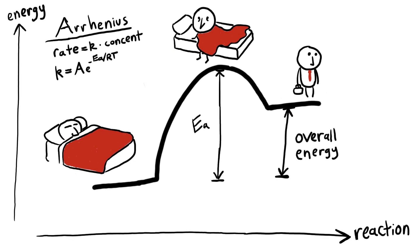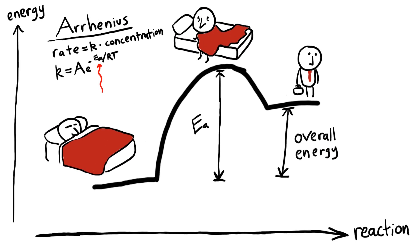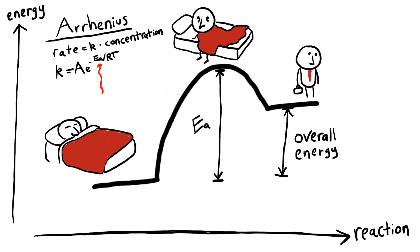If you've studied the Arrhenius equation, this barrier is the activation energy term. You might realize from the form of the Arrhenius equation that the speed of the reaction is related to the energy barrier. The smaller the barrier, the faster the reaction goes. This makes sense to us. The more uncomfortable it is to get out of bed, the harder it is to do, and vice versa.